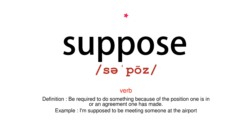VERB DEFINITION: Be required to do something because of the position one is in or an agreement one has made. Example: I'm supposed to be meeting someone at the airport.